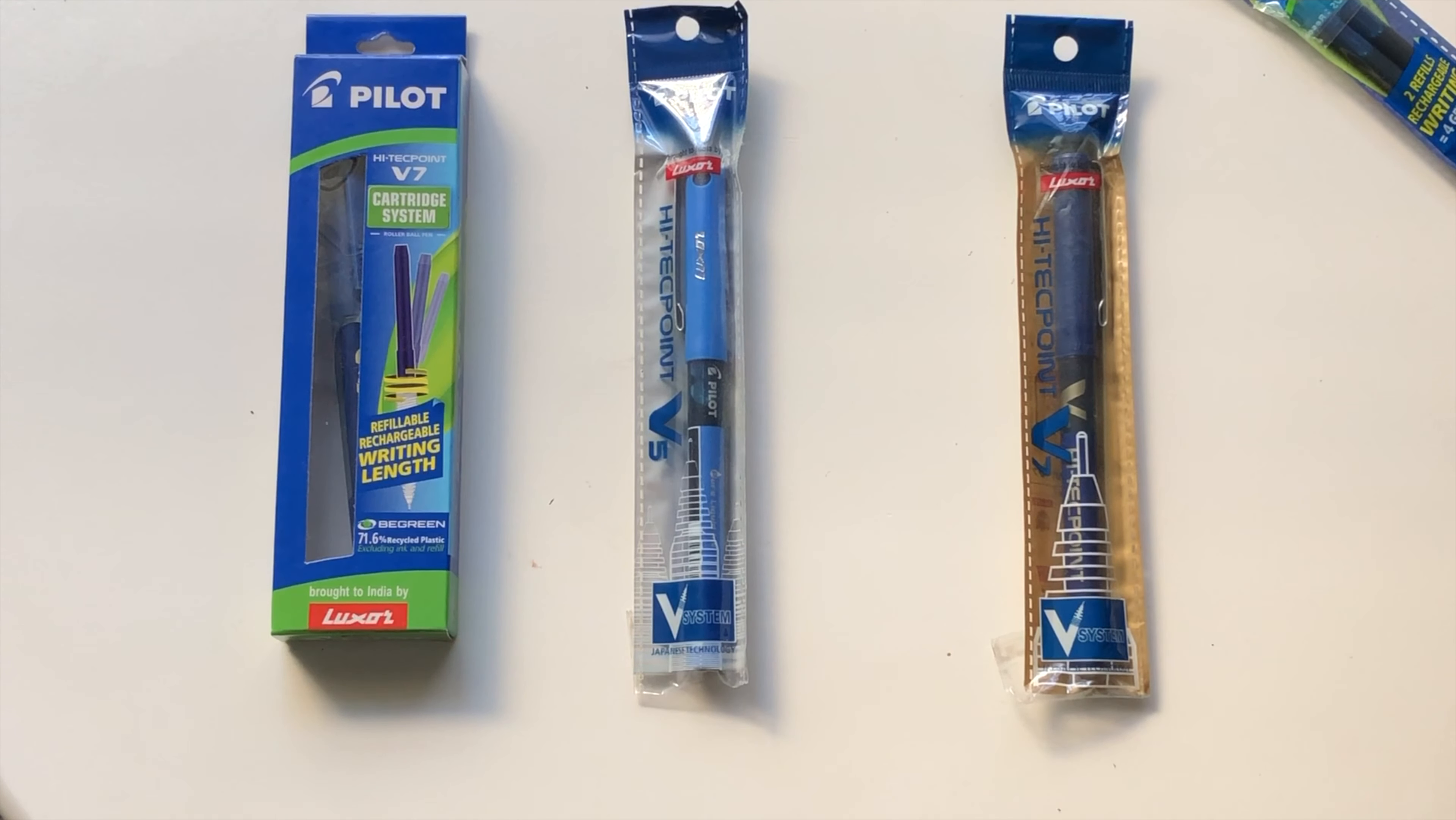This is refillable, this can't be refilled. This one has a metallic clip, this one has a plastic clip. This is a little bigger in terms of length, this is smaller. This is 0.5mm tip, this is 0.7mm tip. Those are the major differences.